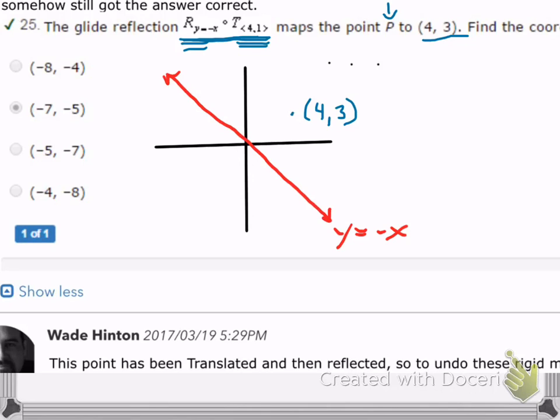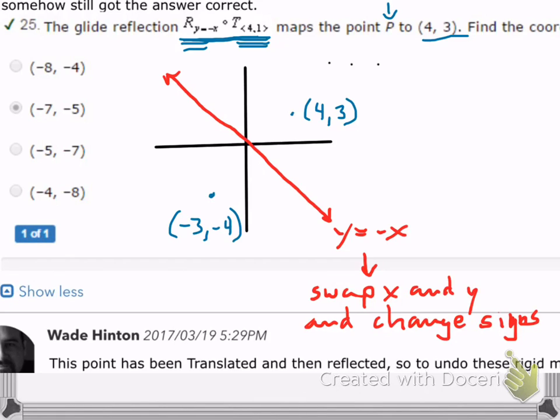Now, first of all, the rule for reflecting across y equals negative x: you are going to swap x and y and change their signs. So if we're reflecting the point (4, 3) across y equals negative x, you swap the 4 and the 3, so you would have (3, 4), and then you change the signs, and that's going to take us to (-3, -4). That's how you reflect across y equals negative x. You swap the x and y and you change their signs because y is the opposite of x and x is the opposite of y. So you just do the opposite of both and swap them. That's the rule for reflecting across y equals negative x.